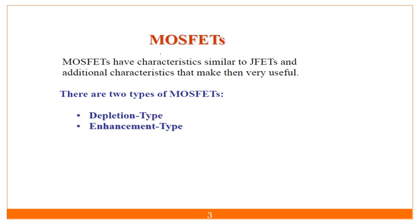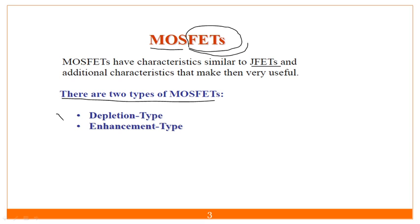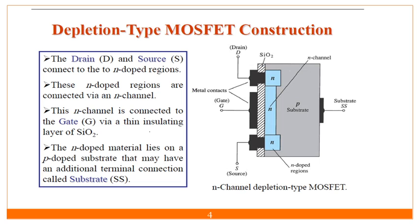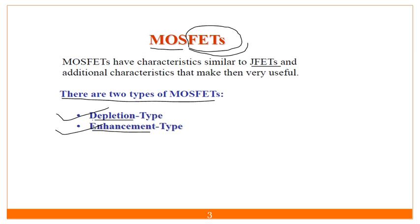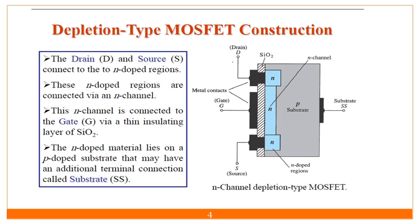MOSFETs have similar characteristics to JFETs — junction field effect transistors. A field effect transistor with metal oxide semiconductor is a MOSFET, and one with a junction is a JFET. As far as MOSFET types are concerned, there are two types: depletion type MOSFET and enhancement type MOSFET — D-type and E-type MOSFET.